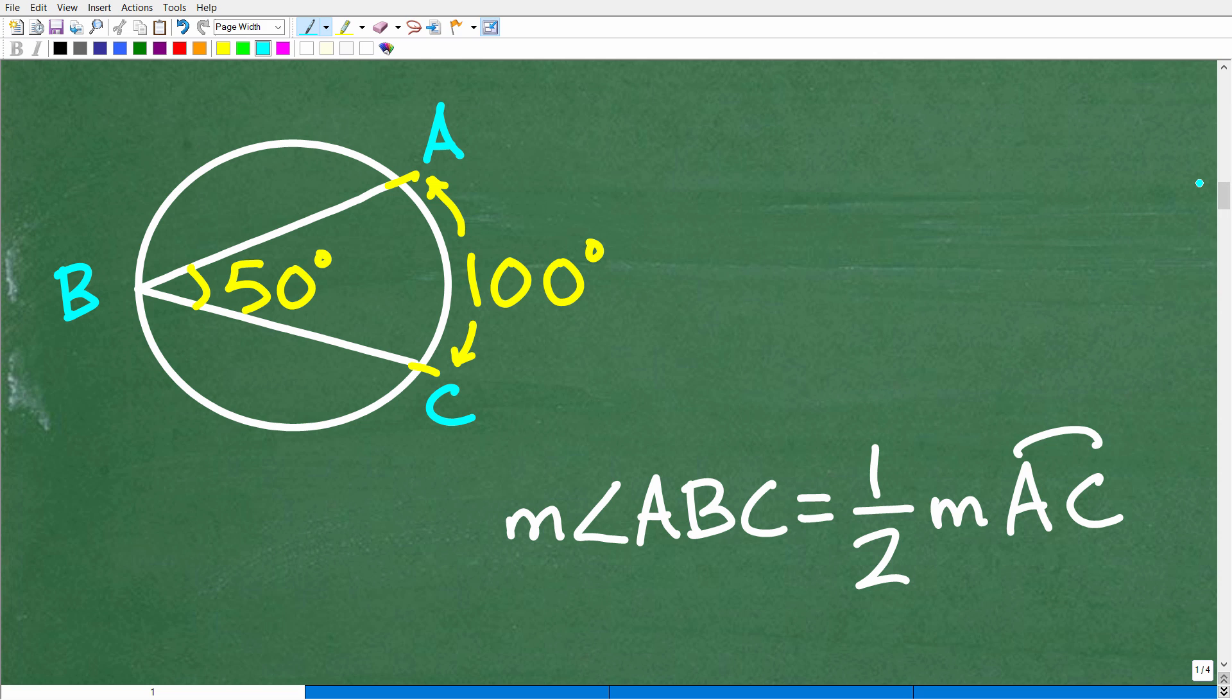So let's put some points here. Call this point A, point B, and point C on the circle. And here is our inscribed angle. Here is the formula that you need to know. It looks very fancy, but it's pretty straightforward. It says the measure of angle ABC, let me highlight this, this is the measure of angle A, B, C. So where is A, B, C? This is point A, B, and C.